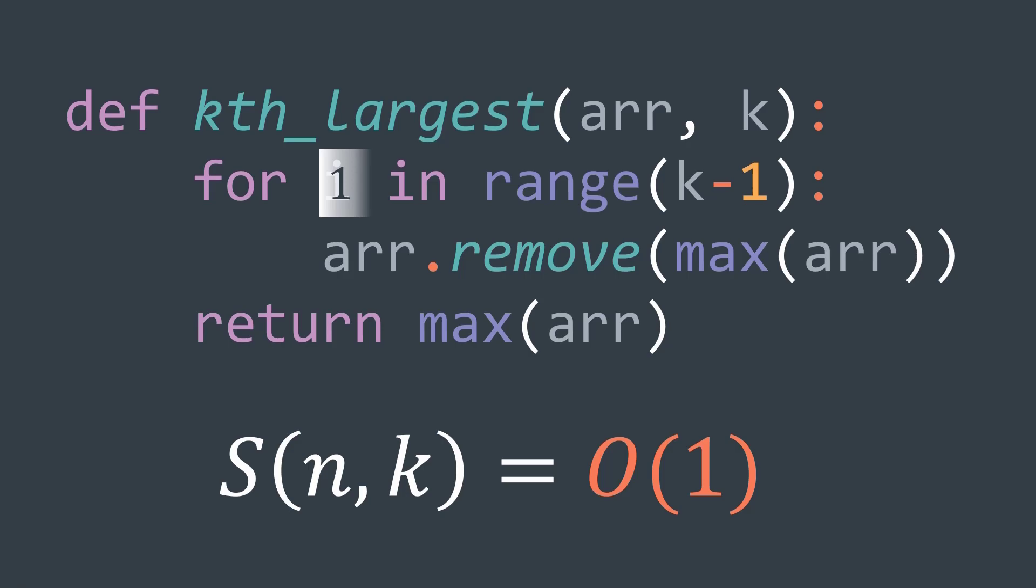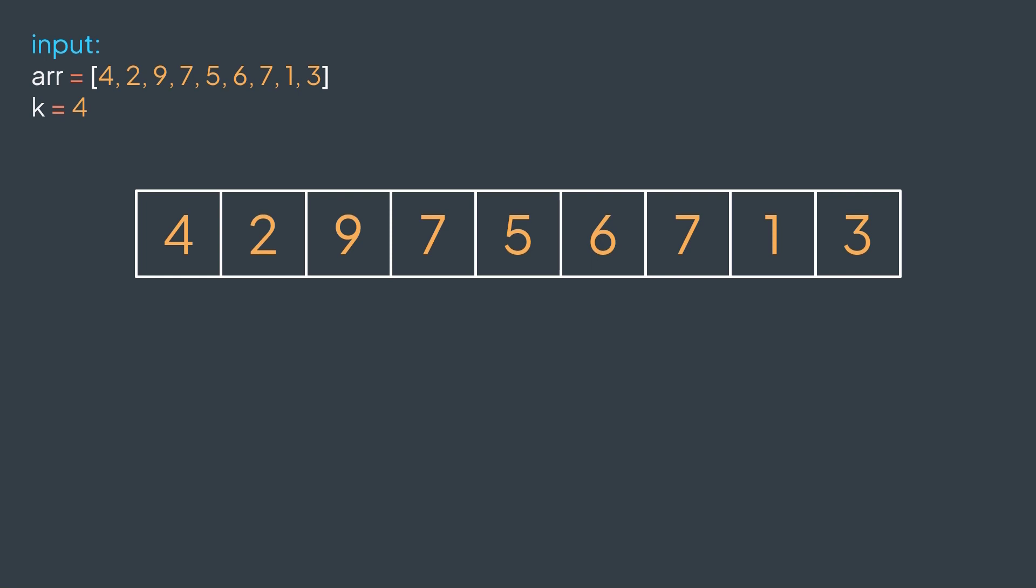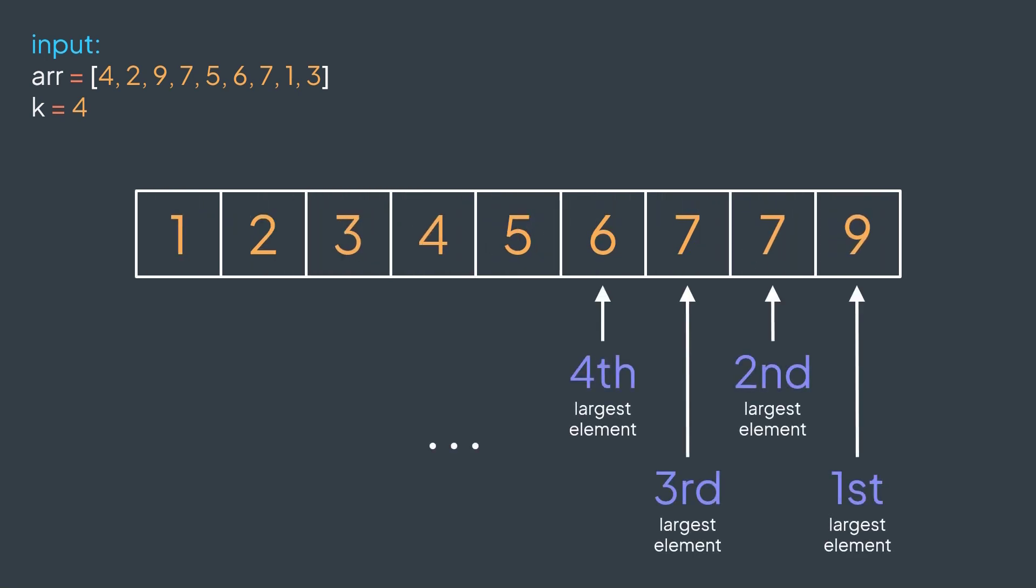The idea of this second solution is to start by sorting the array, because by doing so, we know that the largest element is at the last cell, the second largest element just before it, the third largest element just before it, and so on. With our array, we sort it, and k is 4, so we return the kth element starting from the end.